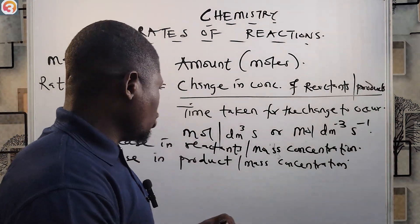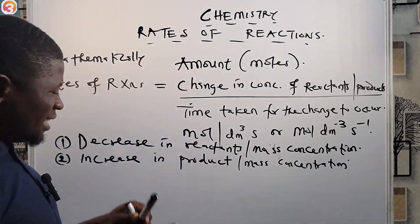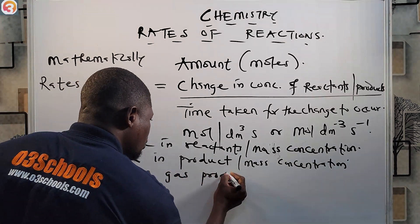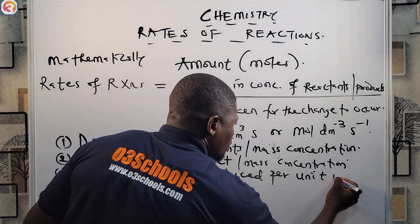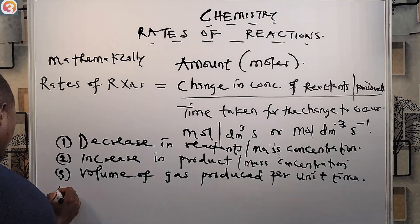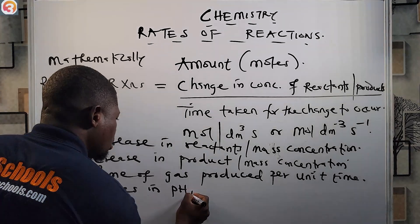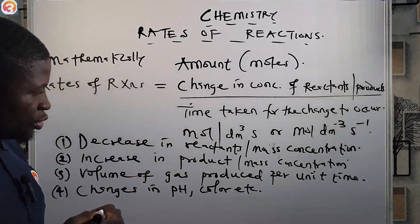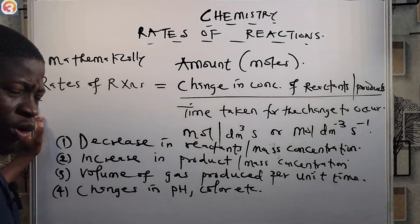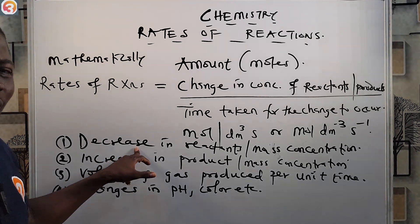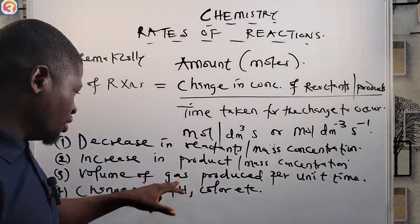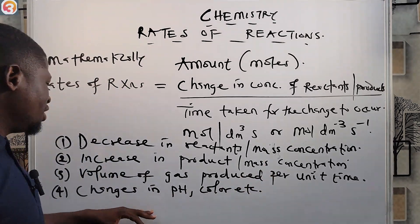Thirdly, we look at the volume of gas produced per unit time. And lastly, we also look at changes in pH, colour, and so on. So these are how reaction rates are determined — we measure the rate of a chemical reaction by the decrease in reactants or mass concentration, increase in product or mass concentration, volume of gas produced per unit time, and changes in pH, colour, and other factors.